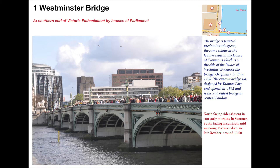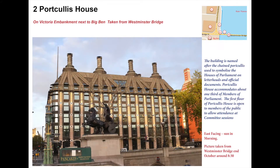Next we see Portcullis House. We have a portcullis on the Houses of Parliament letterhead, and this design is supposed to reflect that. It holds about a third of the Members of Parliament and was built in 2001, designed to be sympathetic with the Houses of Parliament. The Norman Shore building, which is the old Scotland Yard, is on its right-hand side.